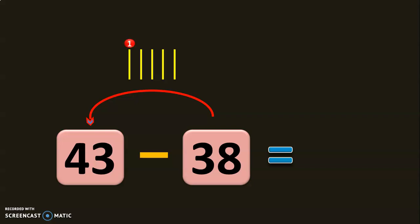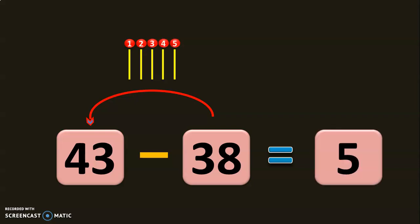So how many numbers? 1, 2, 3, 4, 5. So the answer is 5. 43 minus 38 will give you the answer 5.